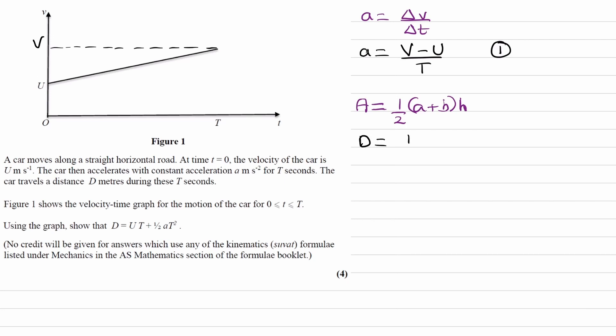So the area is the distance, call that capital D. That's what we are told the distance traveled by the car would be. So that's a half times A plus B, so U plus V, multiplied by the height, which is in this case T. And that's our second equation.